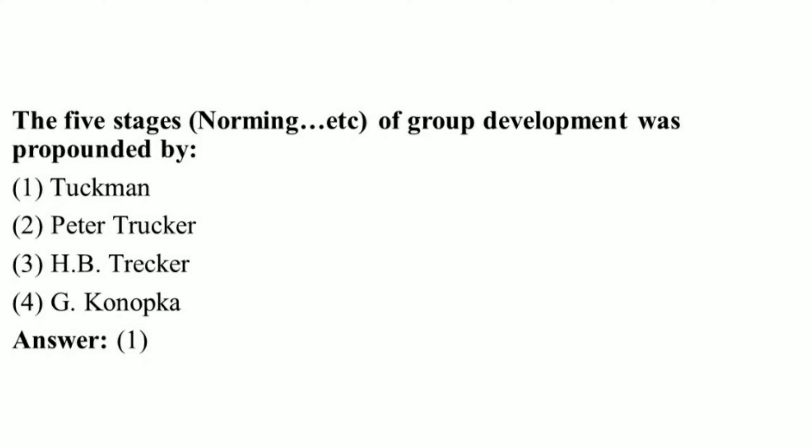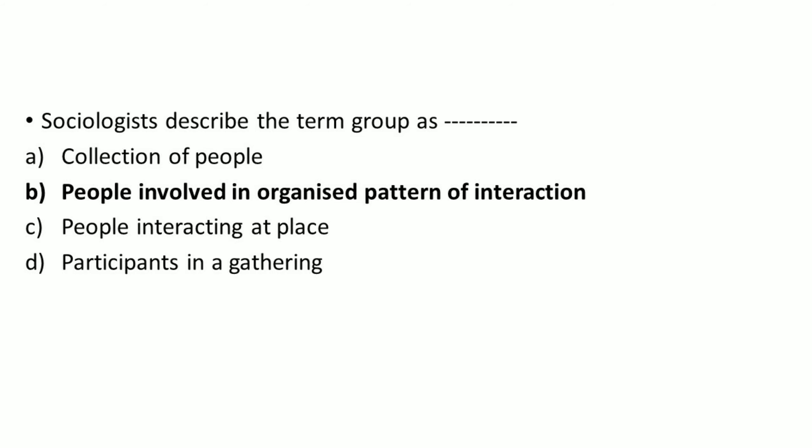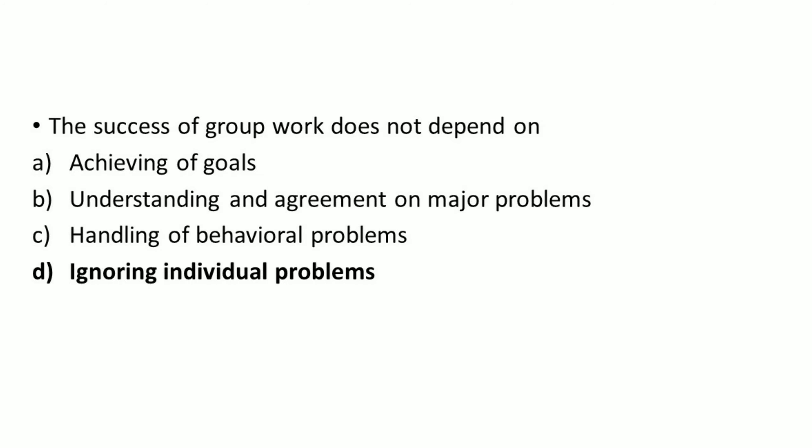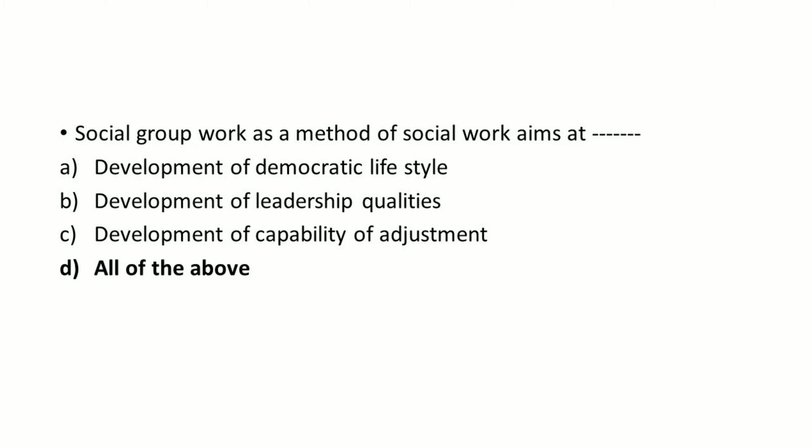The five stages of group development — forming, norming, etc. — were proposed by: right answer option 1, Tuckman. The following questions are not from UGC NET but collected from other preparation books. Sociologists describe the term 'group' as: right answer option B, people involved in an organized pattern of interaction. Which one of the following is a secondary group? Right answer: option C, an association. The success of group work does not depend on: right answer option D, ignoring individual problems.